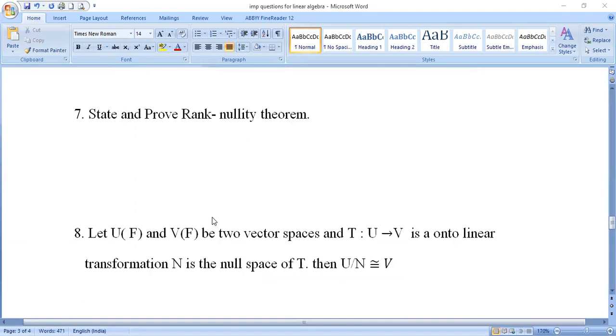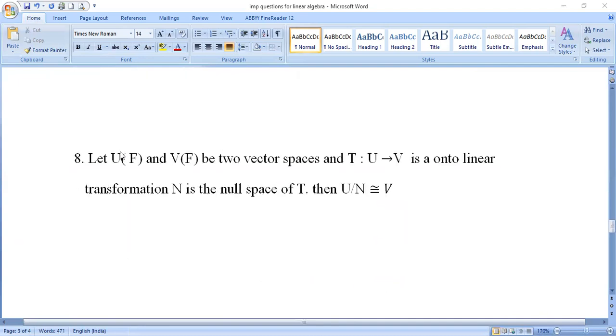Eighth question: Let U(F) and V(F) be two vector spaces and T: U → V is an onto linear transformation, and N is the null space of T, then U/N is isomorphic to V. This is a rare question that appears occasionally with about 50 percent chance.